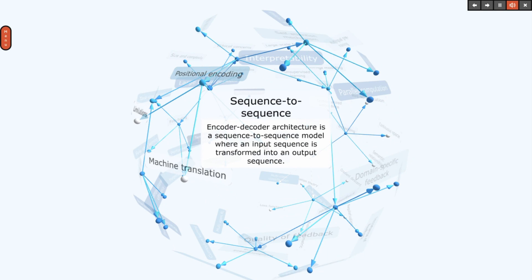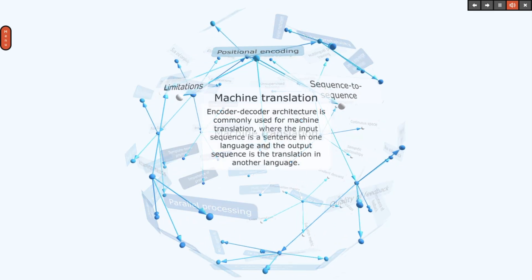The encoder-decoder architecture is a sequence-to-sequence model where an input sequence is transformed into an output sequence. It is commonly used for machine translation, where the input sequence is a sentence in one language and the output sequence is the translation in another language.